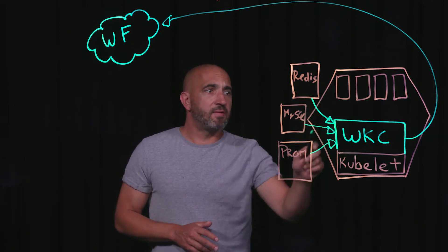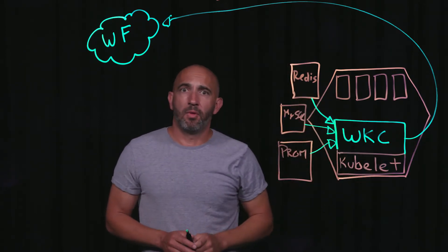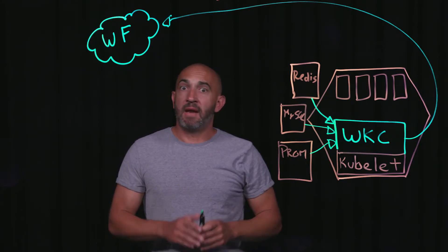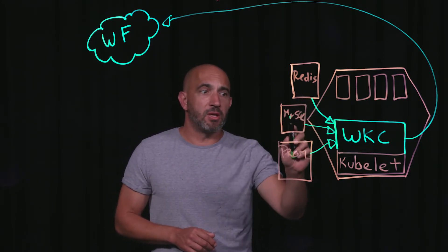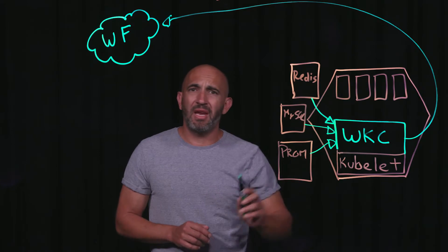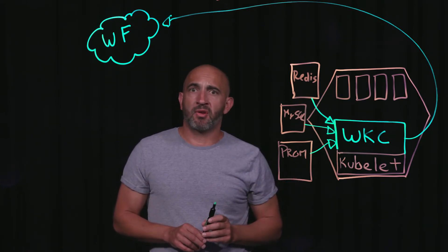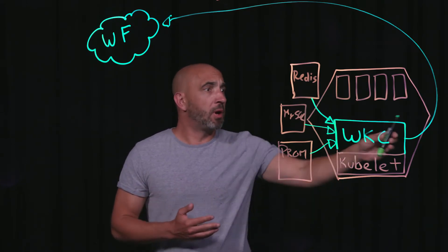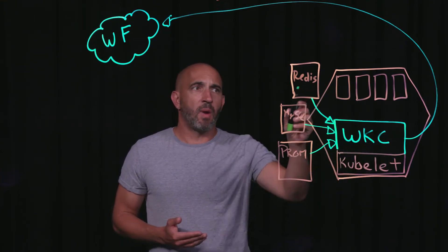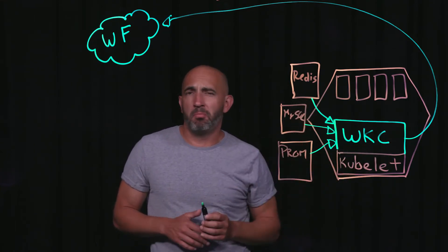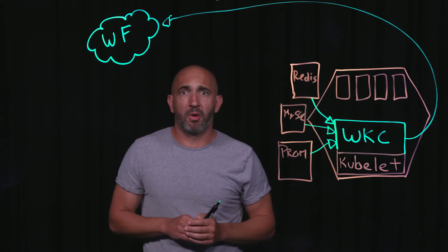All of these pieces of data will now flow through into the Wavefront pipeline. And if desired, we can even have different scrape intervals for each one of them. So maybe your application metrics come every 10 seconds, your infrastructure metrics every 60 seconds, and Redis and MySQL maybe every 30 — whatever is right for you.